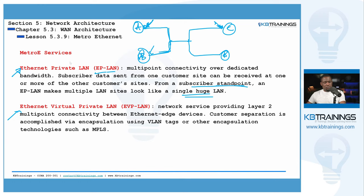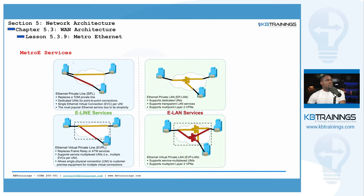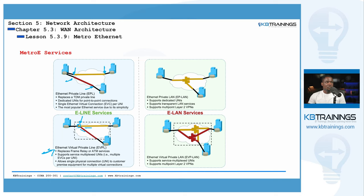Here's a visual summary of all four services. For EPL, one UNI connects to one UNI — single subscriber, no mixing of traffic. For EVPL, two EVCs connect to a single UNI, separating traffic from two different customers A and B by tagging their traffic with VLANs, so customer B's traffic is sent to location B and customer A's to location A from that single UNI. That's the key difference between EVPL and EPL.